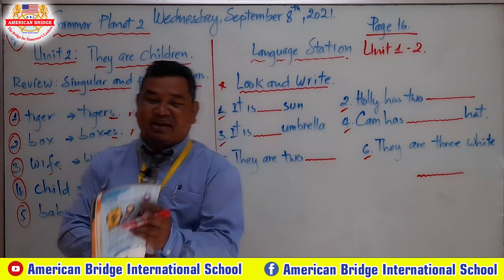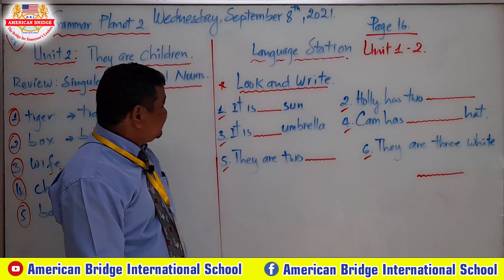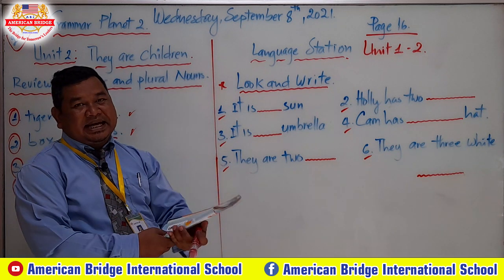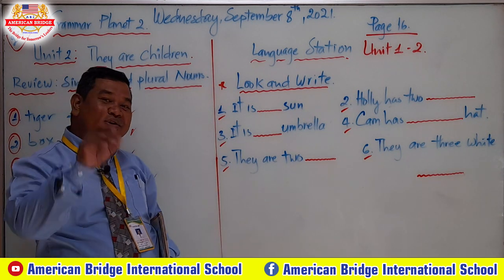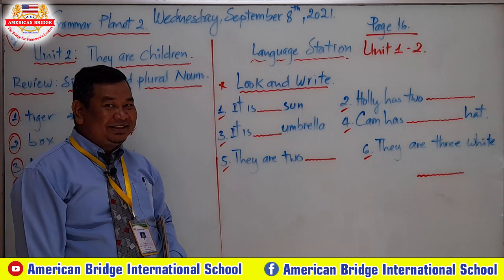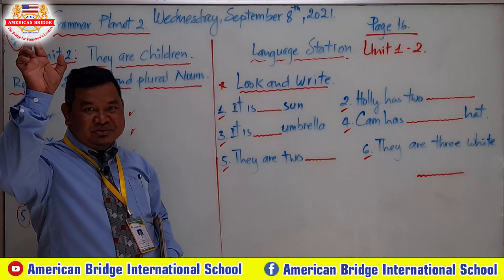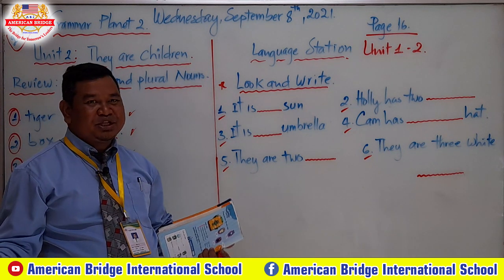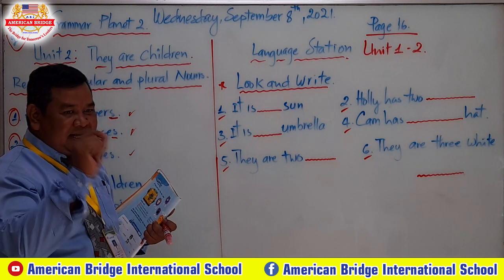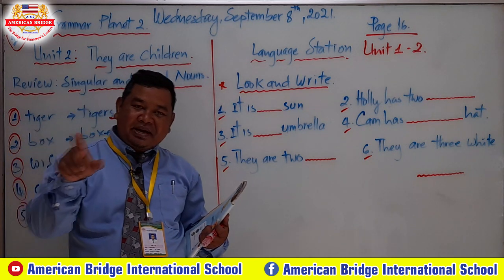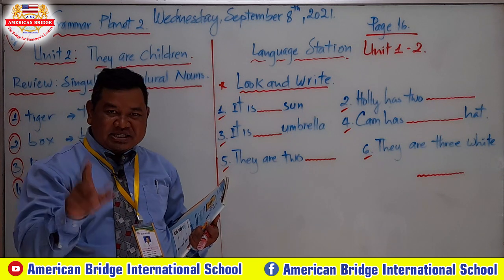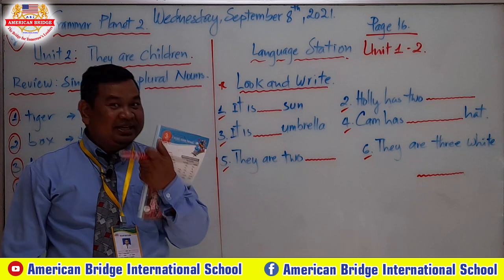Now it's time to practice doing the exercise on page 16 together — Language Station. You need to study 'a,' 'an,' and 'the.' We use 'the' for only one specific thing, like 'the moon,' 'the earth,' 'the world.' We use 'a' for any one thing in front of a consonant sound, and 'an' for any one thing in front of a vowel sound. Remember that, students.